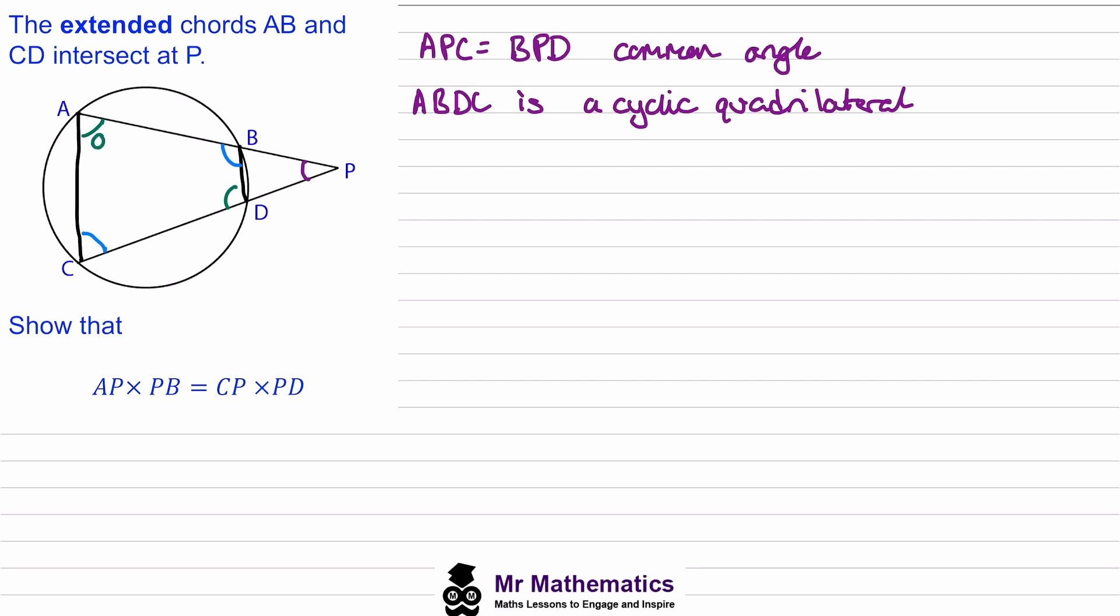So if we call this one angle A, the opposite angle here will be 180 minus A. And if we call this one angle C, then the angle at B will be 180 minus C.